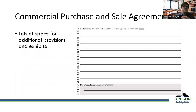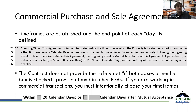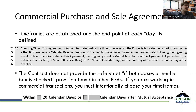Sections 13 and 14 give you a lot of space for additional provisions and to explain all the attachments and addendums on the contract. This is for informational purposes — provide as much explanation and detail as you can. The extra space was given in recognition of the flexibility needed in commercial transactions.